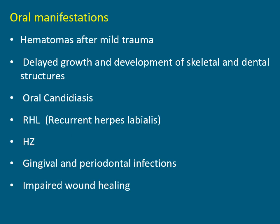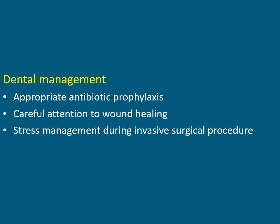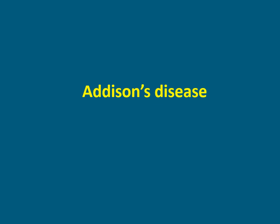Oral manifestations of Cushing's syndrome include hematomas after mild trauma, delayed growth and development of skeletal and dental structures, oral candidiasis, recurrent herpes labialis, and herpes zoster infections, gingival and periodontal infections, and impaired wound healing. These are the oral manifestations of Cushing's syndrome.